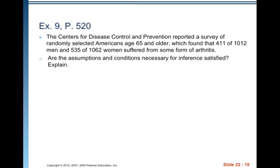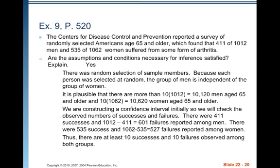Are the assumptions and conditions necessary for inference satisfied? Yes. There was a random selection of sample members. Because each person was selected at random, the group of men is independent of the group of women. We didn't select couples. It was just randomly selected individuals, so breaking them up into men and women, if each individual is independent of the other, then each group will be independent of each other.